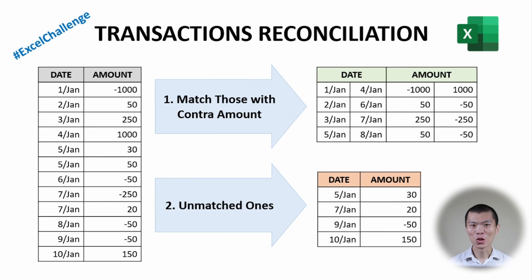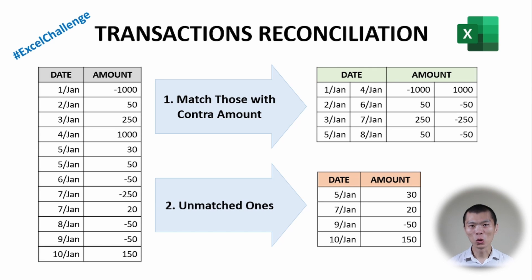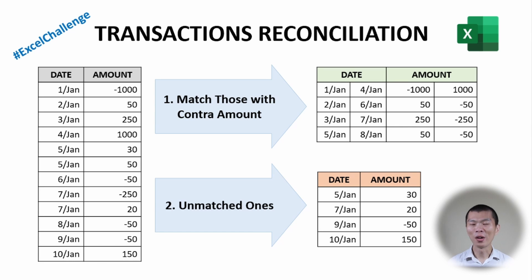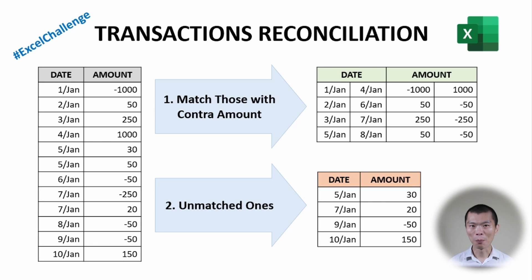The left side shows a list of transactions sorted by date, with positive and negative amounts. What we need to do is find matching amounts — a positive and negative of the same value — and move them to the matched list in the top right corner. The bottom right corner is where all unmatched transactions remain.